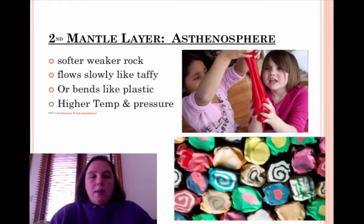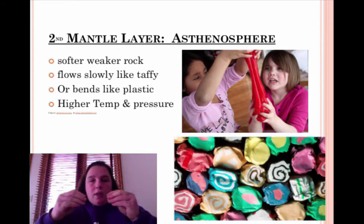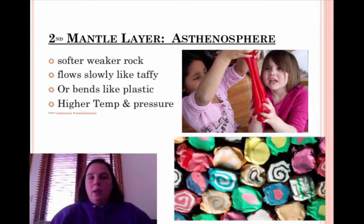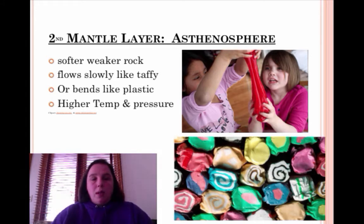The second mantle layer is called the asthenosphere. It is softer, weaker rock. It flows like taffy — that's what I'm showing you here in the pictures — or it bends like plastic. Use whatever analogy works for you.